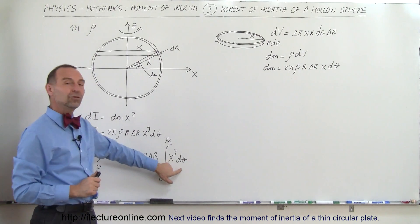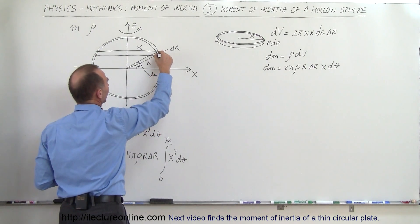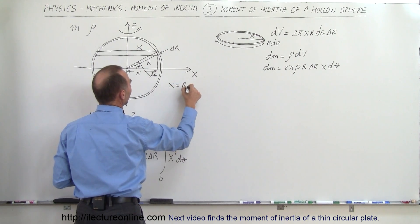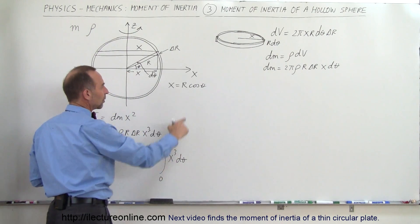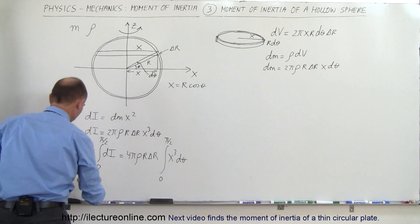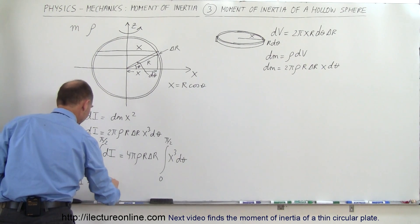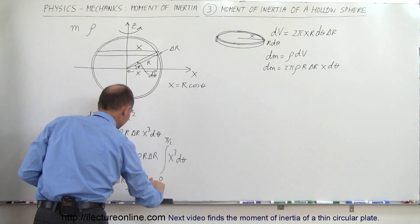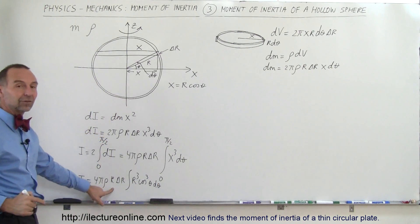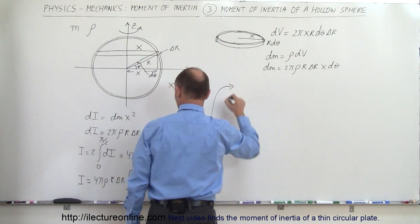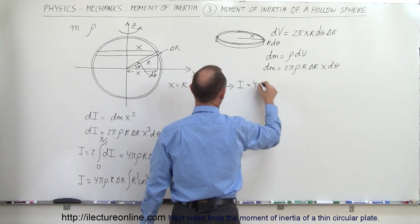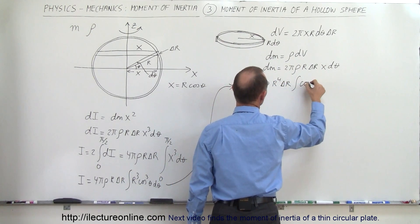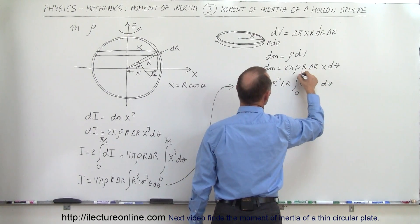Next we need to express x in terms of theta. x is the adjacent side to the angle theta with hypotenuse r, so x = r cos θ. Therefore x³ = r³ cos³ θ. Substituting, I = 4π rho r delta r times the integral of r³ cos³ θ d theta. The r³ comes outside giving r to the fourth, so I = 4π rho r⁴ delta r times the integral of cos³ θ d theta from 0 to π/2.